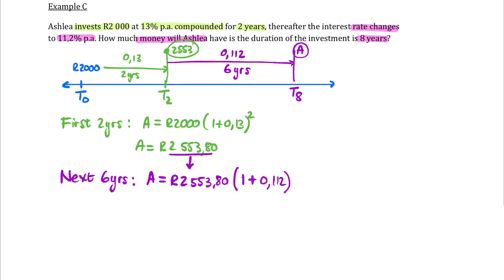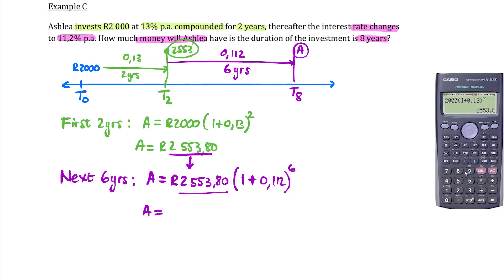Now we have a different interest rate, 1 plus 0.112. And our exponent now is not eight, it's six. This money is receiving interest for six years at that rate. So if you use your calculator, you can use the answer key like we did yesterday. And we have an exponent here of six. So the final value is 4,828 Rand.